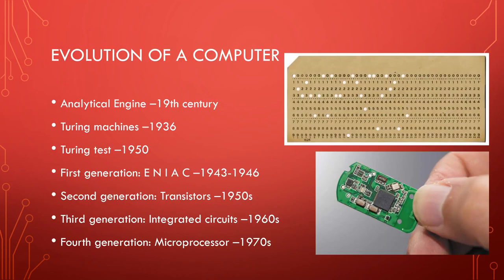The evolution of the computer. The analytical engine was first designed by Charles Babbage back in the 19th century — a mechanical computer design that relied on punch cards, which is what you see in the top right-hand corner. My mom remembers making programs on punch cards back in college, about 50 to 70 years ago. That was how you would write a program to process your data.